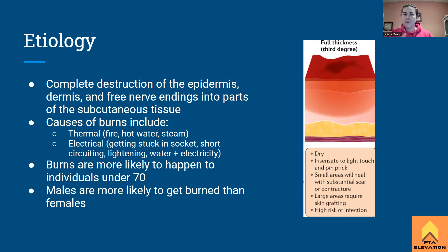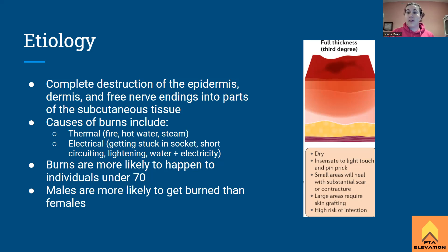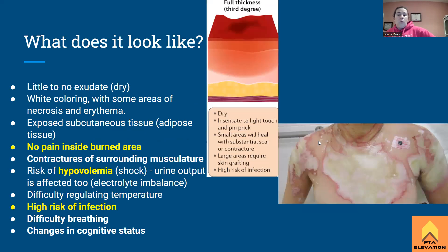We've covered what's happening — destruction of the epidermis, dermis, and free nerve endings, exposing the subcutaneous tissue. An important epidemiological note: individuals under the age of 70 are most likely to get burns, and males are more likely to get burned than females. Males tend to get the short end of the stick with traumatic injuries like spinal cord injuries, TBIs, and burns.